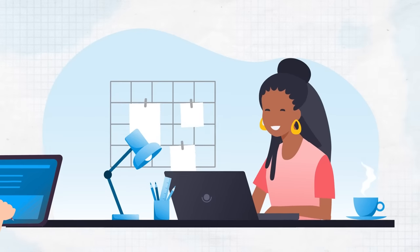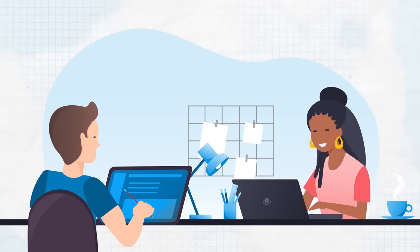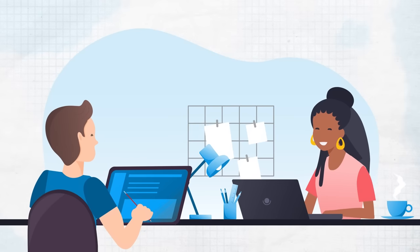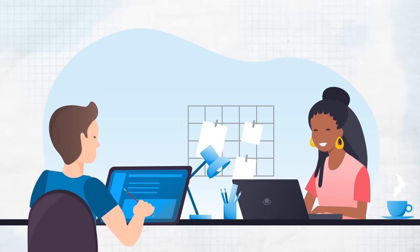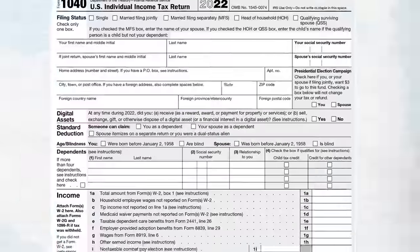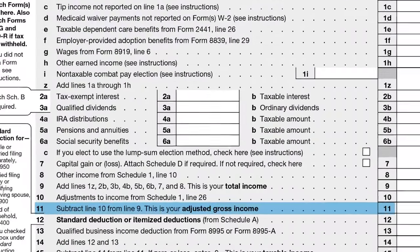If you hire an accountant or use other tax services, you may not need to calculate your AGI to figure out how to save with it. But no matter whether your taxes are in your hands or someone else's, this little number on Line 11 plays a key role in your financial life.